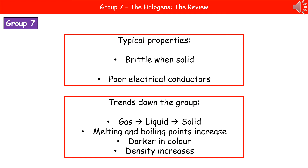We need to know some of the typical properties of our halogens. When they're solid, they're actually brittle — they break quite easily — and they're poor electrical conductors. We also need to know the key trends as we go down the group: they go from a gas to a liquid to a solid, they get darker in colour, and their melting and boiling points increase.